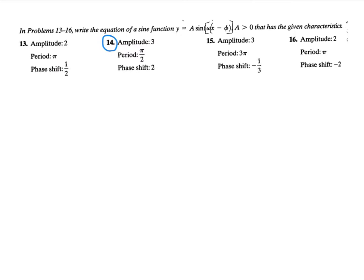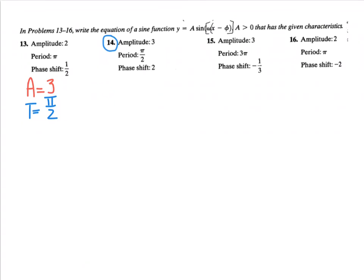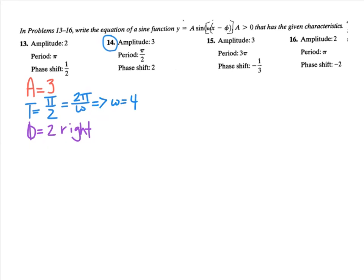Now we want to go the opposite direction — they give us the characteristics and we want to write a sine function. For number 14, they tell us the amplitude, which is our A value. It specifies that A should be positive, so A equals 3. They give us the period T as π over 2, and the phase shift phi as positive 2, meaning 2 to the right. The only issue is they give us the period but not omega, so we use the formula: period equals 2π divided by omega, and solving for omega gives us omega equals 4.